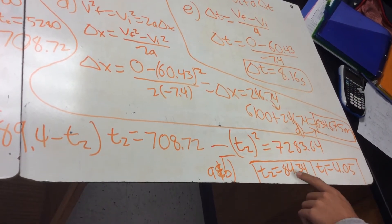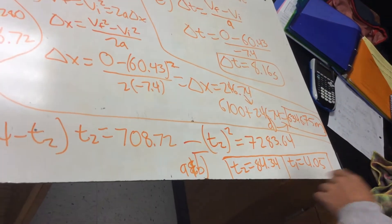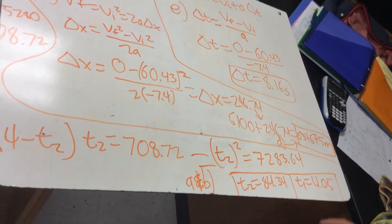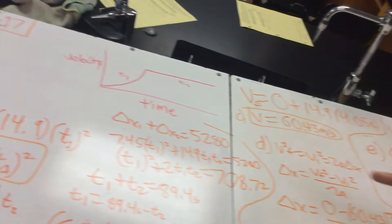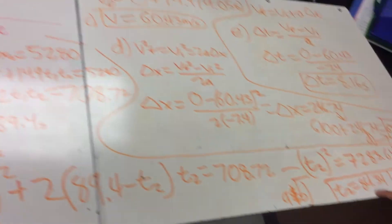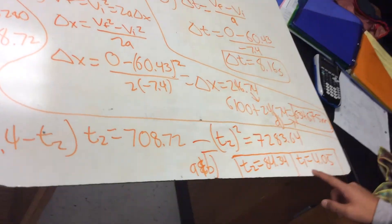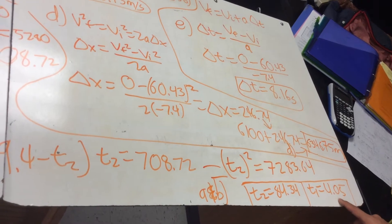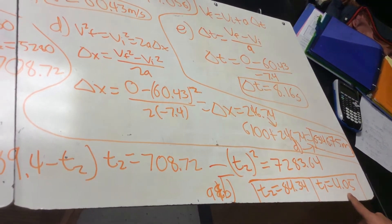And so for t2, you'll get 84.34. And that's t2. That's part B. And then, since we know the total time is 89.4 seconds, you just subtract this from 89.4. And you get t1, which is 4.05 seconds. So that's part A and B.